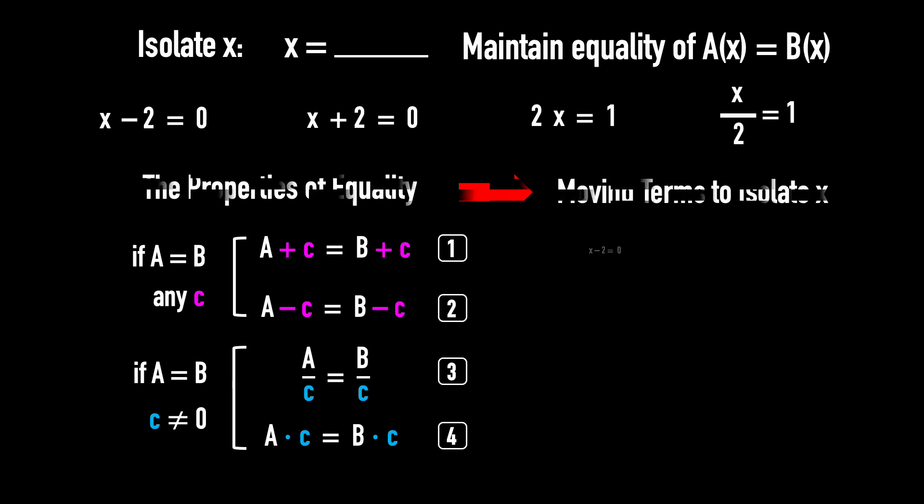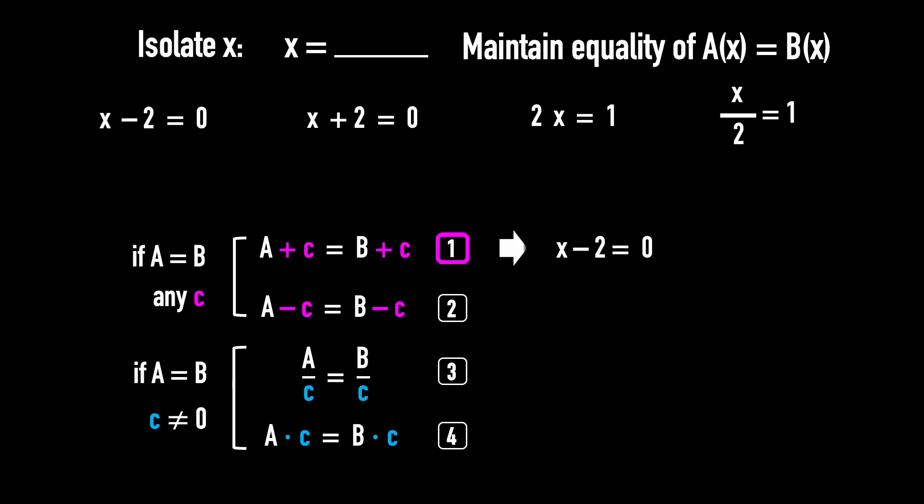Let's start with example 1. Apply rule number 1. Add the same number 2 to both sides. X minus 2 plus 2 equals 0 plus 2. Combine like terms, X equals 2.